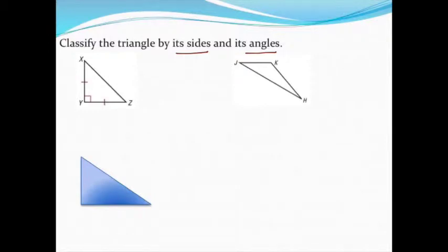This first triangle, I'm going to start with its sides. I can see based on the tick marks that I have two congruent sides. That tells me I'm dealing with an isosceles triangle, which means I have two sides that are the same length.